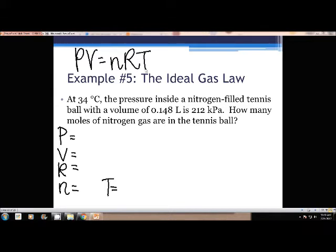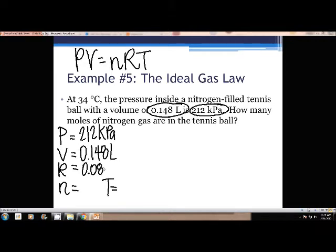So are we given a pressure for this problem? Yeah, what's the pressure? 212 kPa. Are we given a volume? Yes. The 0.148 liters. R is not given in the problem, but we know it because it's on your paper. It's 0.08206. Are we given any number of moles? No. Is the moles what we're solving for? Yes, because it says right here how many moles. I'm going to just put my question mark next to N, because that's moles. And then temperature, 34 degrees Celsius. But we switch it to Kelvin. So we have to take the 34 plus 273.15, and what do you get? 307.15.